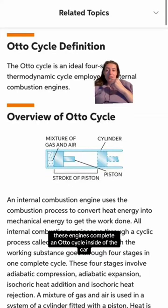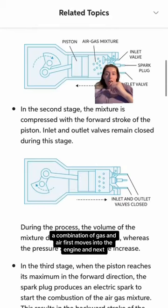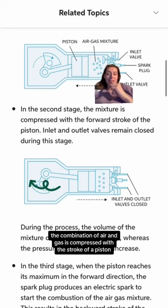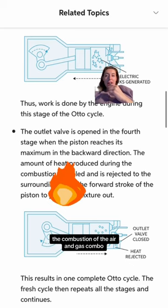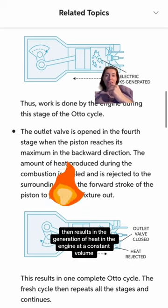These engines complete an autocycle inside of the car in order to turn gasoline into vehicular motion. A combination of gas and air first moves into the engine, and next the combination of air and gas is compressed with the stroke of a piston. The combustion of the air and gas combo then results in the generation of heat in the engine at a constant volume with an increase in pressure.